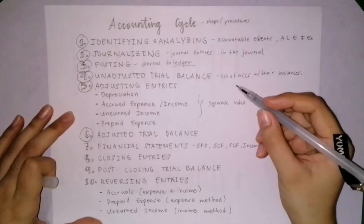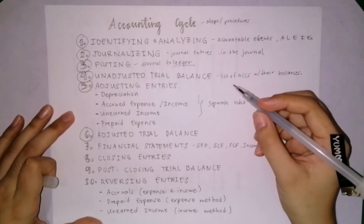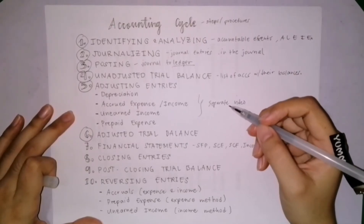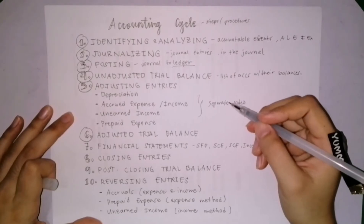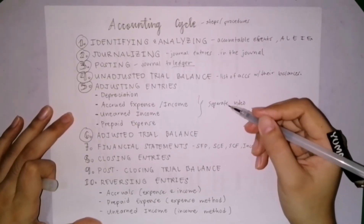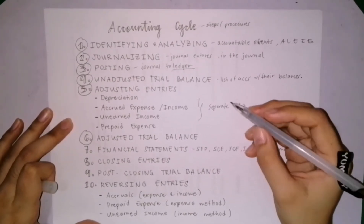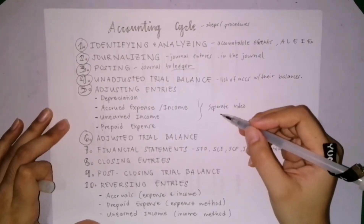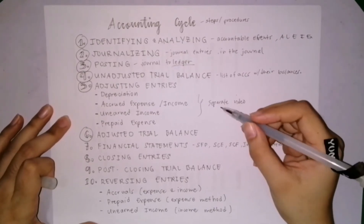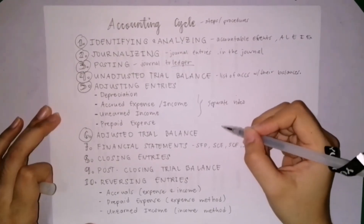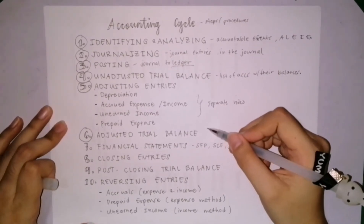Next is the preparation of the adjusted trial balance. The adjusted trial balance will be used in the preparation of the financial statements. Whatever the total amount of accounts listed in the adjusted trial balance, those will also appear in our financial statements.